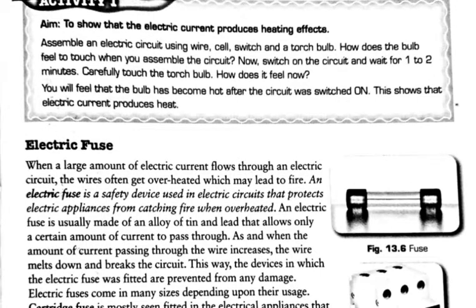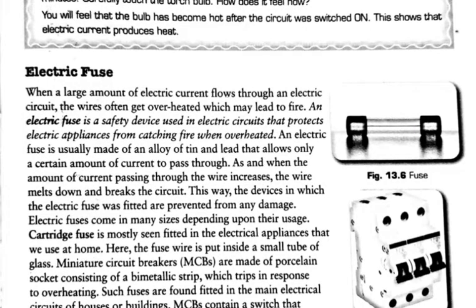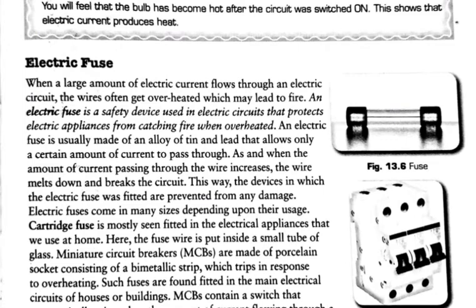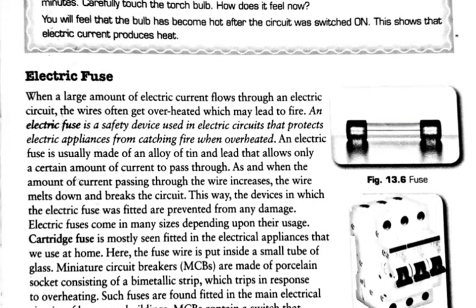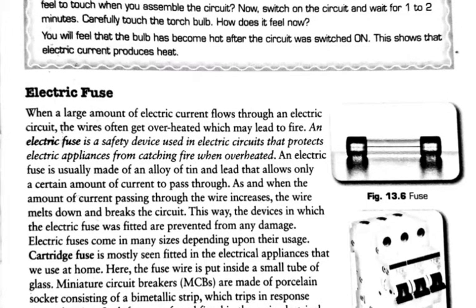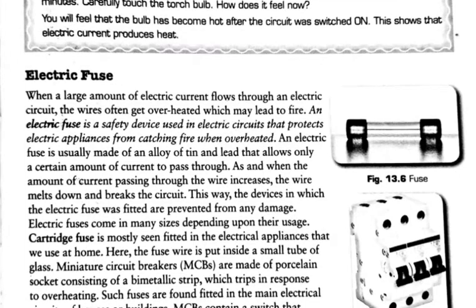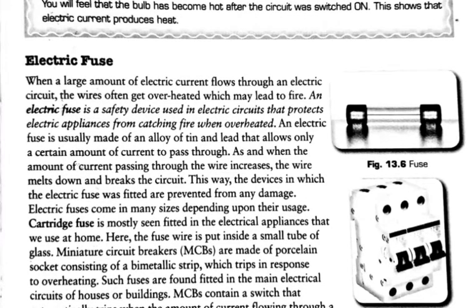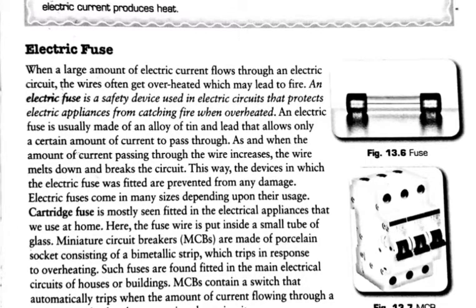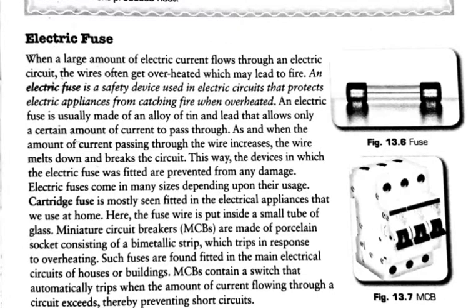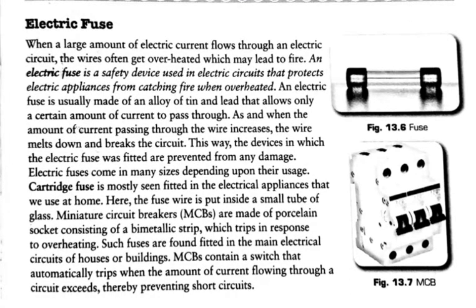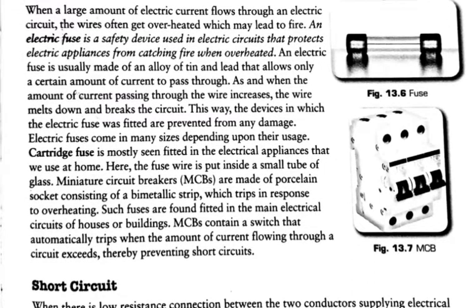This heating effect results in the working of an electric fuse. When a large amount of electric current flows through an electric circuit, the wires often get overheated, which may lead to fire. When current exceeds the safe limit, the circuit may catch fire due to overheating. In this case, an electric fuse can be used as a safety device that protects electric appliances from catching fire when overheated.